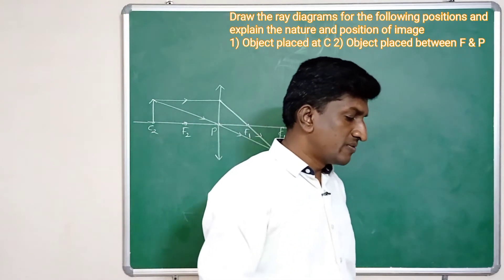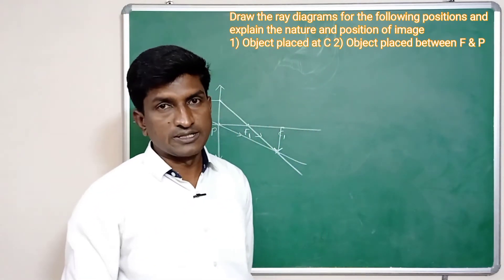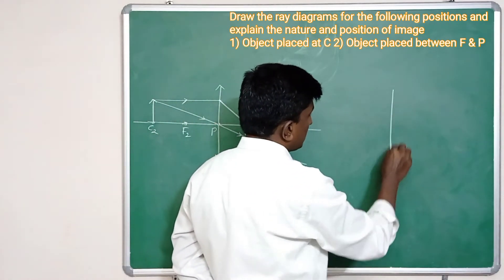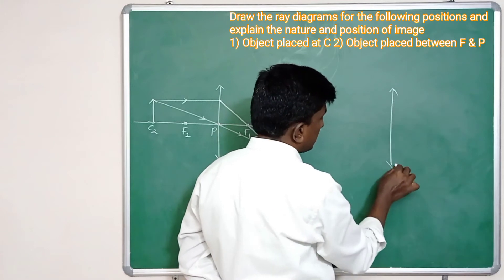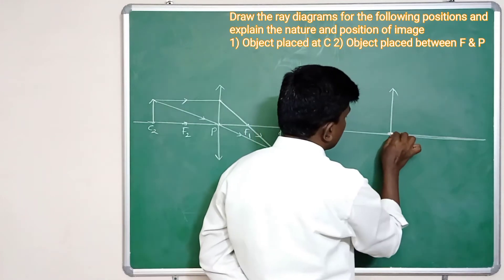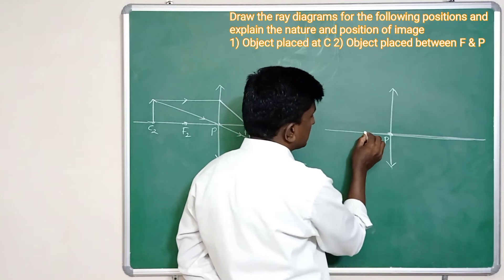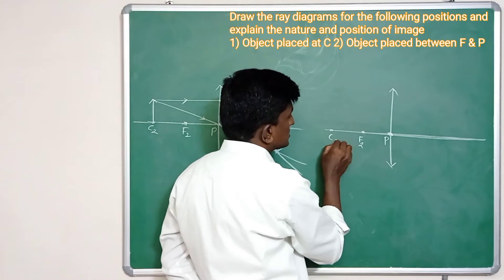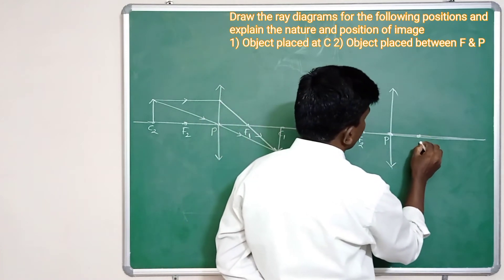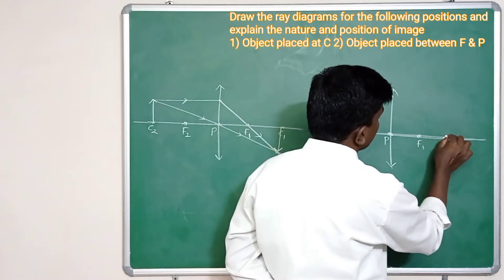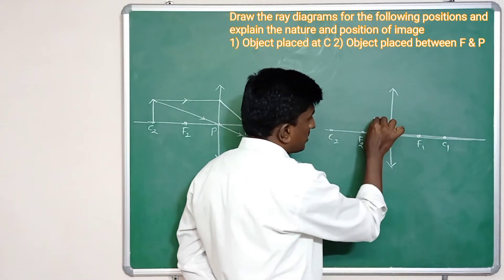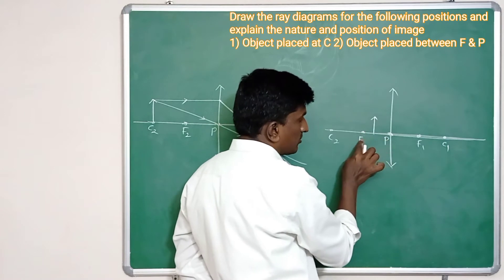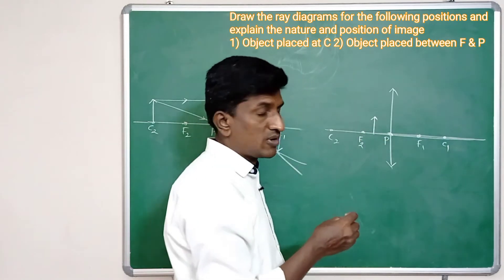The second case: the object is placed between F and the optic center. For that I am taking a convex lens with optical center, F2, C2, F1, and C1. If the object is placed between the focus and the optical center, where is the image formed?